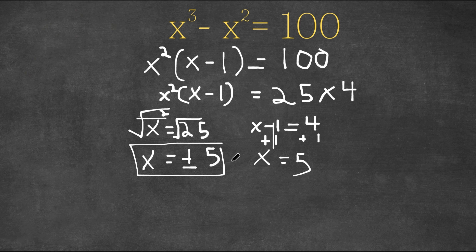However, as you can see, 5 is already one of our solutions. So this is just unnecessary. We already have this as a solution. So we have x equals 5 and negative 5.